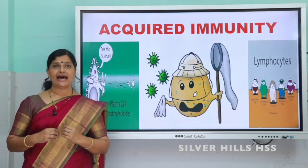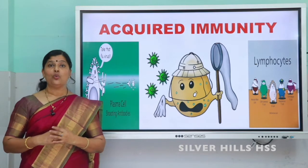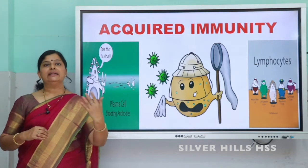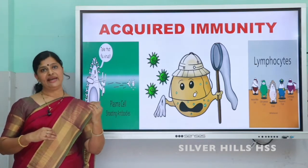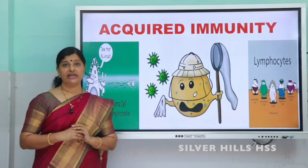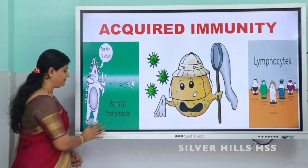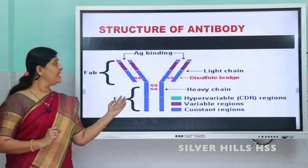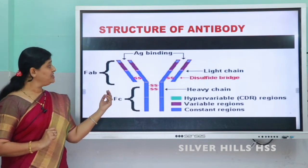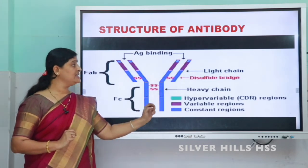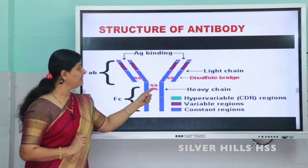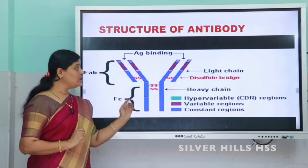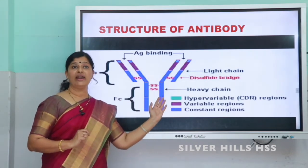That is why we keep saying that for some diseases, once we get affected, there are less chances of getting affected a second time — they are memory-based. Now about antibodies: this is the structure showing an antibody. It has two heavy polypeptide chains and two light chains, which are bonded by disulphide bonds. This is the picture showing the structure of an antibody.